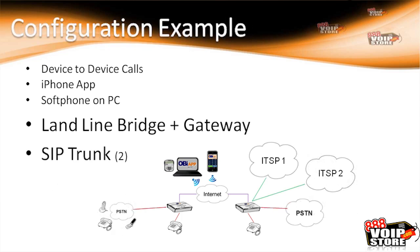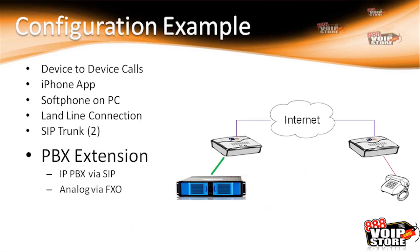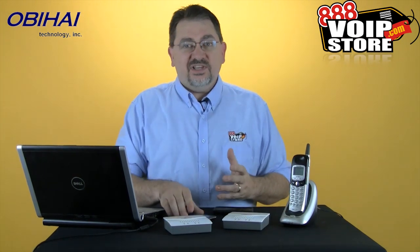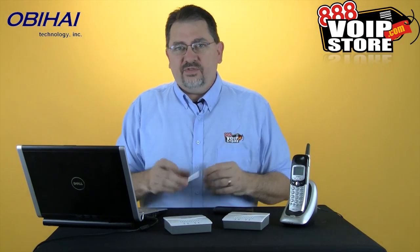Moving up from there, we can connect SIP trunks to this and have device-to-device calling and then out over these different SIP trunks. We can also add it as an extension off of a PBX — as I mentioned, it is an ATA so it can act as an extension, and again work all the way through the OBi talk network. What this means is you can very easily create telecommuter systems and office-to-office branching using OBi talk devices, as well as giving people access with their smartphones.